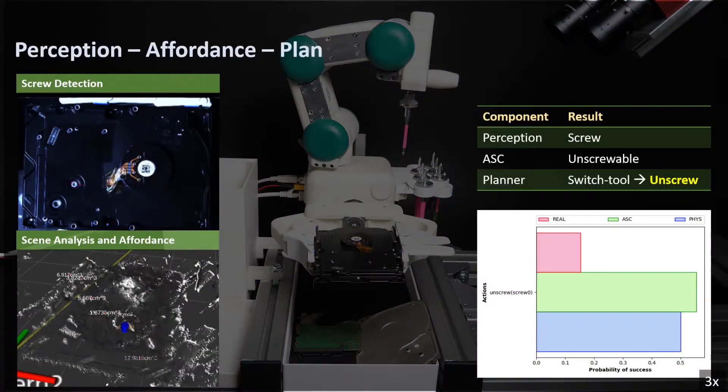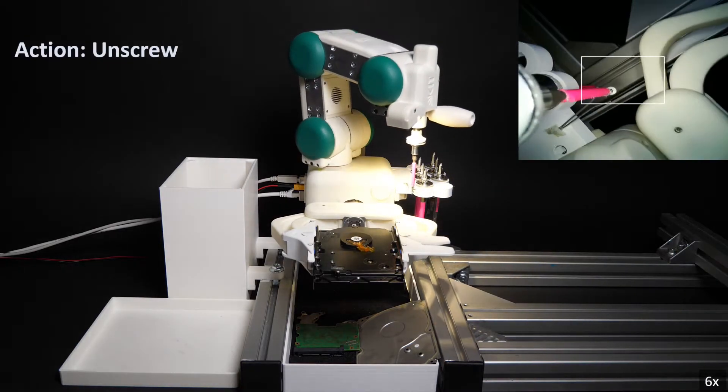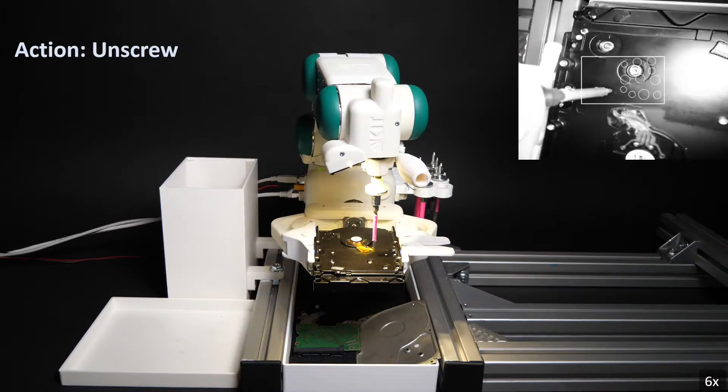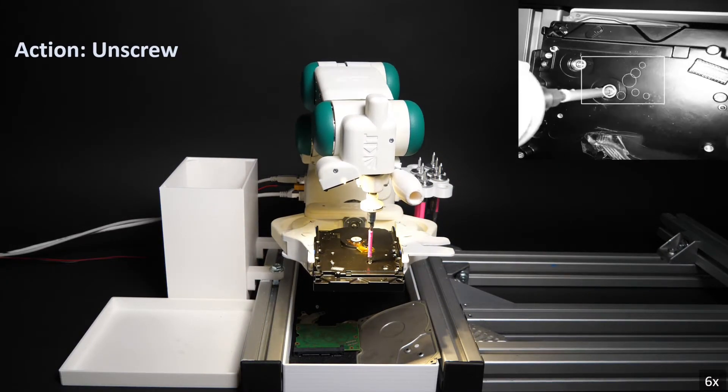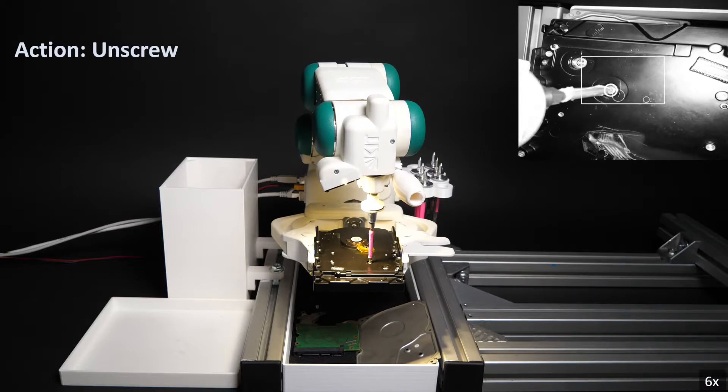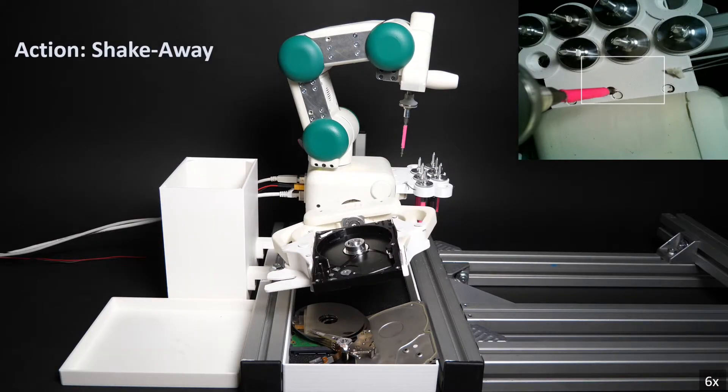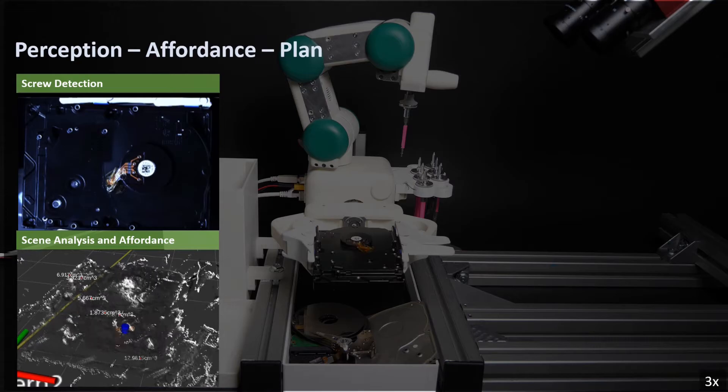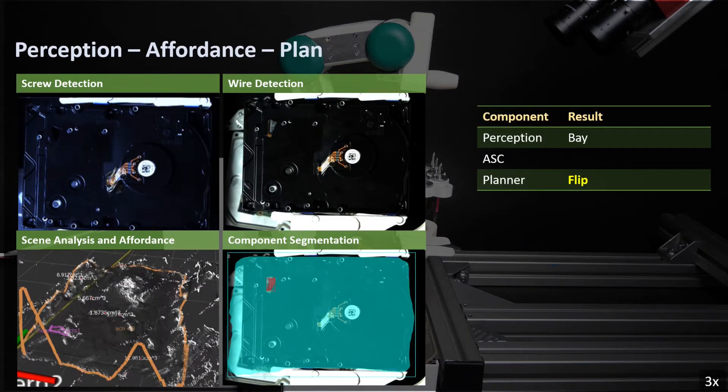With the PCB being removed, the hidden screws that hold the parts on the top side are finally visible. After the unscrew and shake action, all the parts on the bottom side except the bay are dismantled.